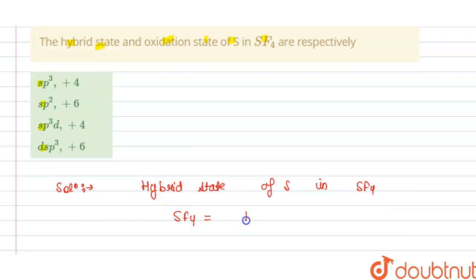In SF4, this equals half of the valence electrons of sulfur, which are 6, and it is surrounded by 4 fluorine. So this is 6 plus 4. This is 10 divided by 2, that is 5.